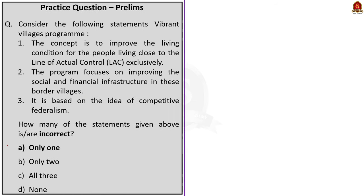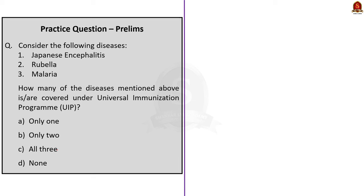Moving on to the second question about the Vibrant Villages Program. Statement 1 says the concept is to improve the living condition of people living close to the Line of Actual Control exclusively — this is incorrect because the program aims to comprehensively develop villages along the northern border, not just along the Line of Actual Control. Statement 2 says the program focuses on improving social and financial infrastructure — this is correct. Statement 3 says it is based on the idea of competitive federalism — this is also correct. Since only the first statement is incorrect and the question asks which statements are incorrect, the correct answer is option A, only one. Moving to the third question: how many of the listed diseases are covered under the Universal Immunization Program? Japanese encephalitis and rubella are covered under UIP, while malaria is not. So the correct answer is option B, only two.